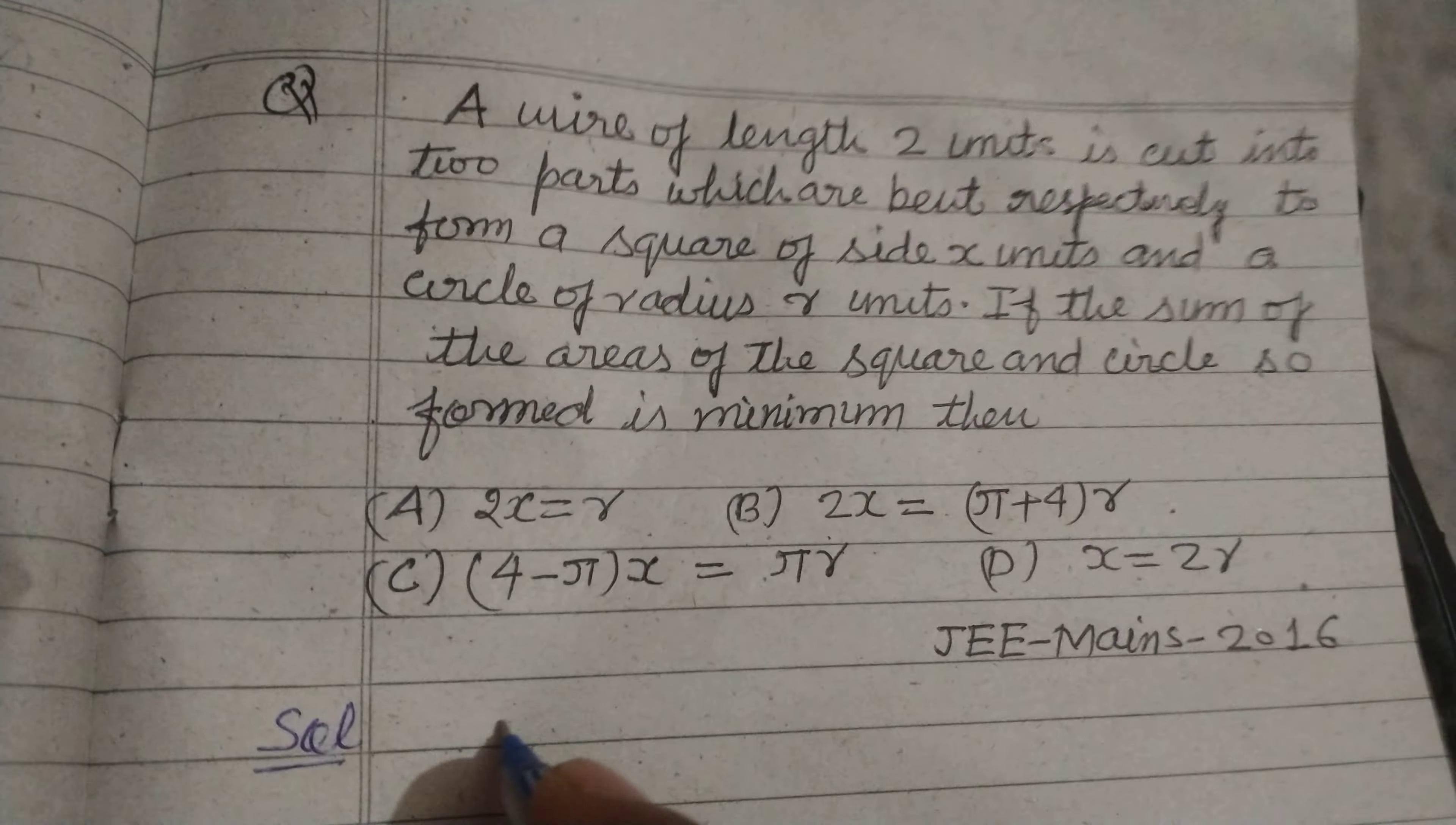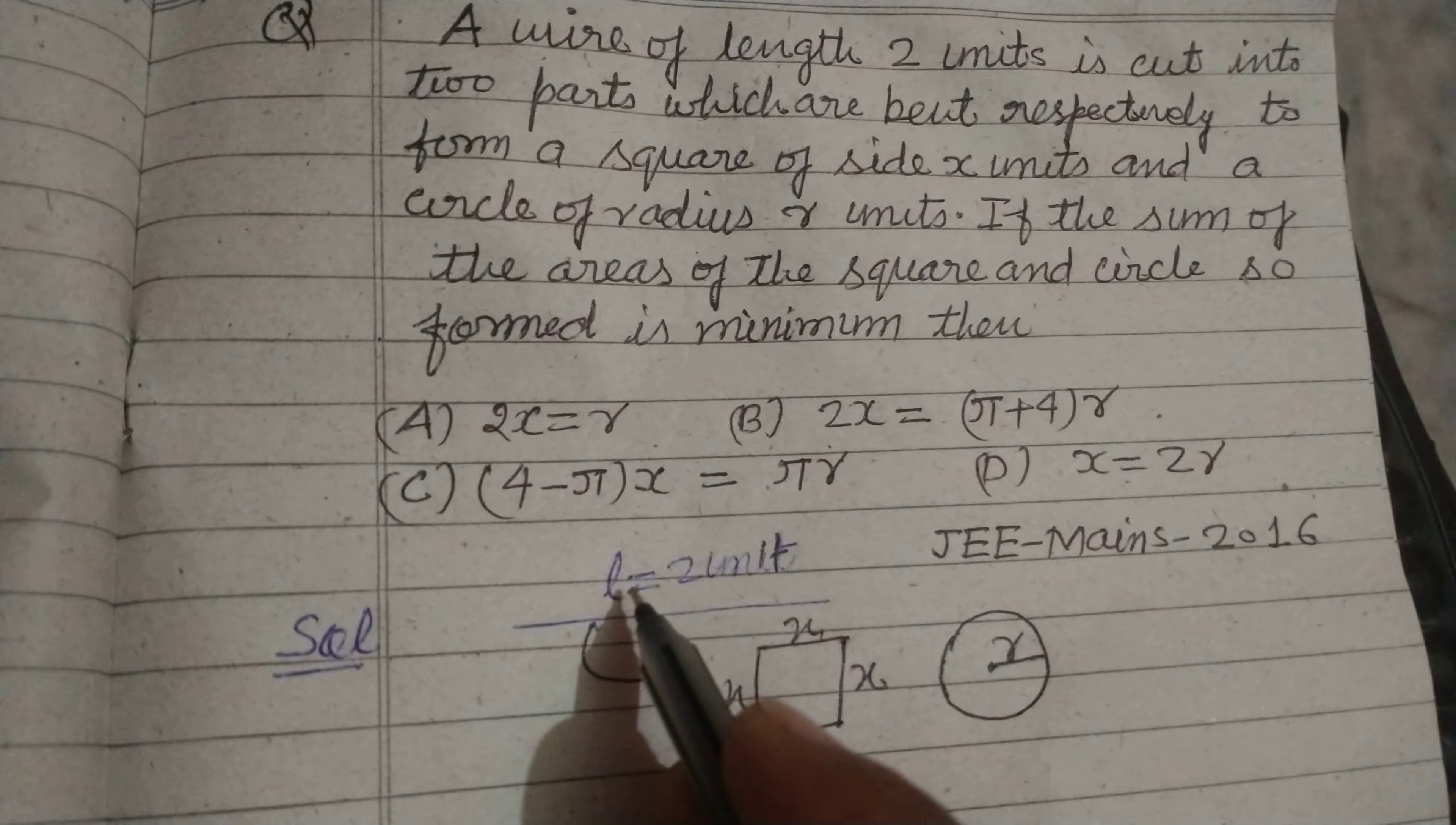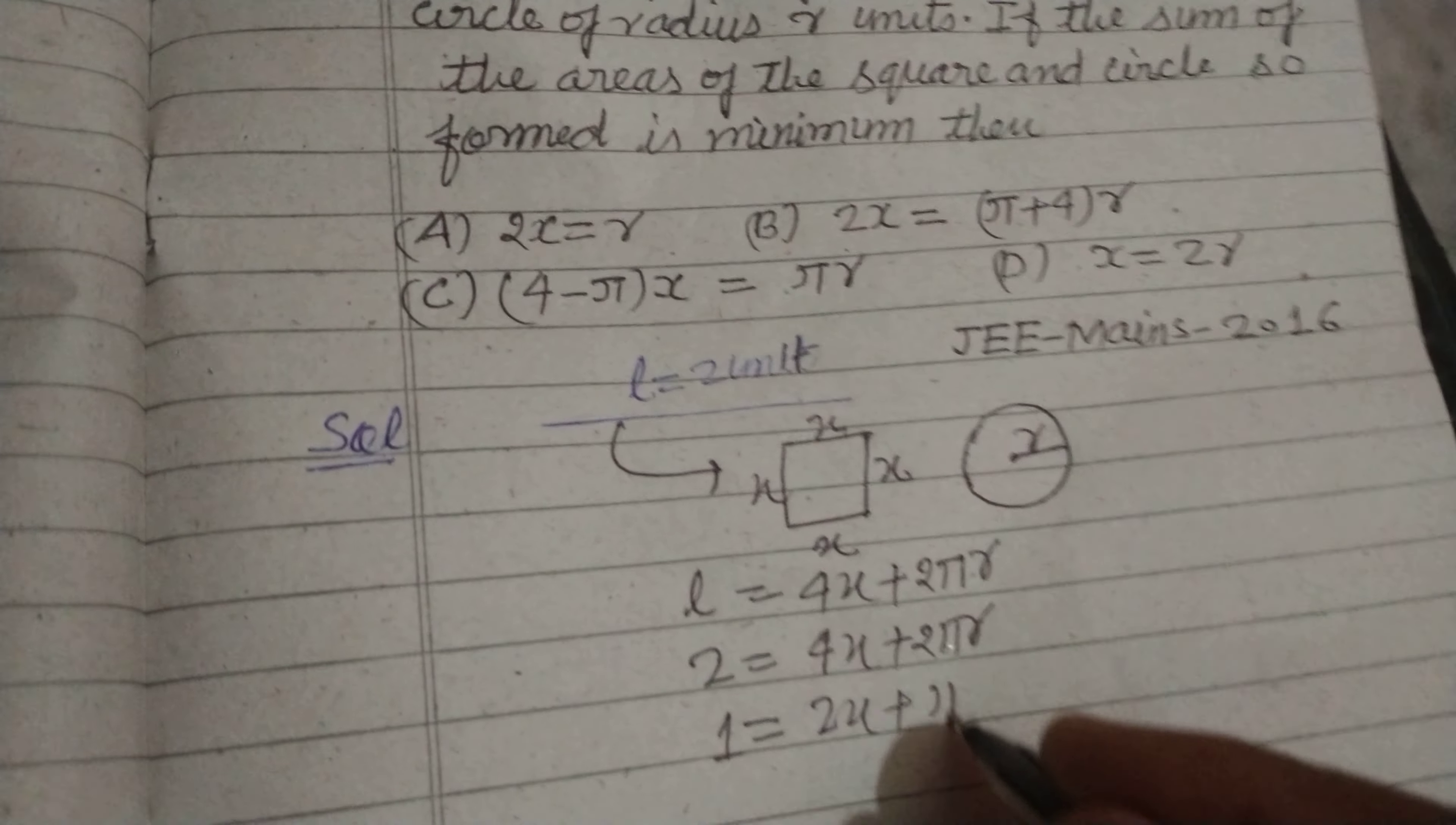So students, first we take a wire of length 2 units and it is bent in form of a square of side x and a circle of radius r. So this length is equal to the perimeter of this square which is 4x and circumference of this circle 2πr. And l is given here as 2 units, so 2 = 4x + 2πr. When we divide both sides by 2, we get 1 = 2x + πr.